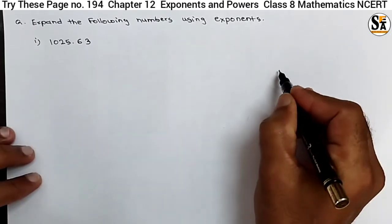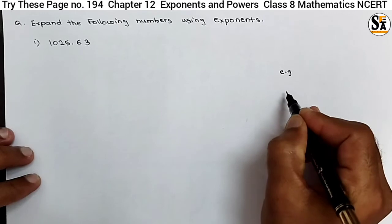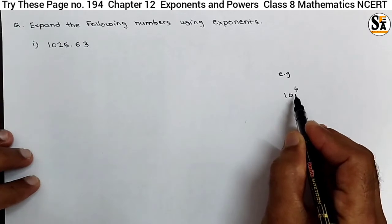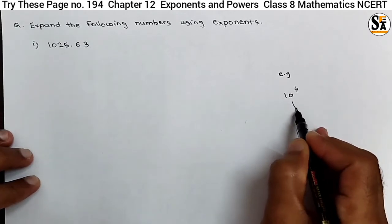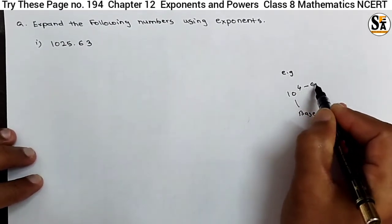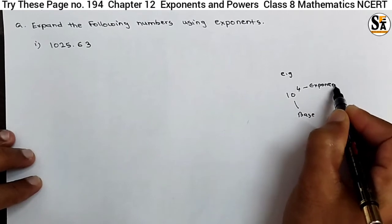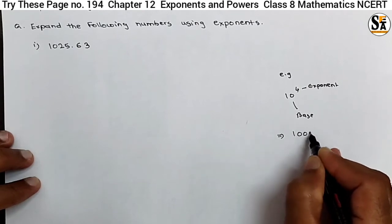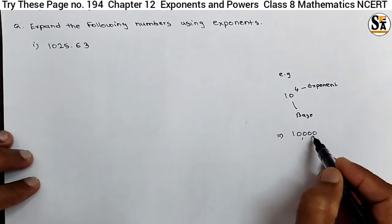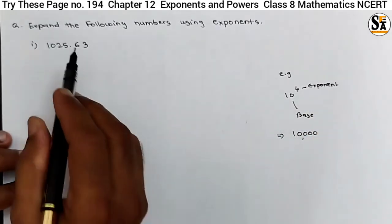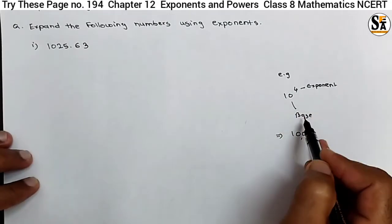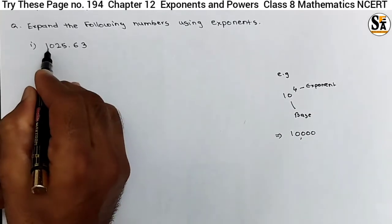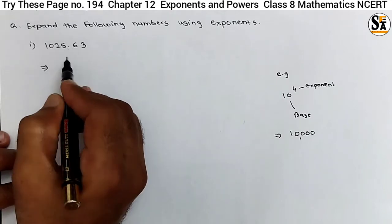We know what an exponent is. For example, if we take the number 10 raised to 4, here 10 is the base and 4 is the exponent. The value of 10 raised to 4 is 10,000. This is the normal form and this is the exponent form. We have to express numbers using this base and exponent format, multiplying the place value of digits with 10 raised to some power.